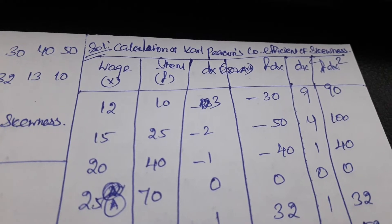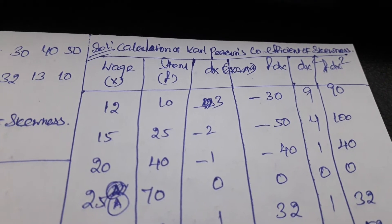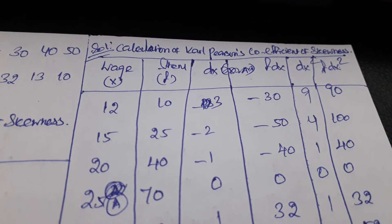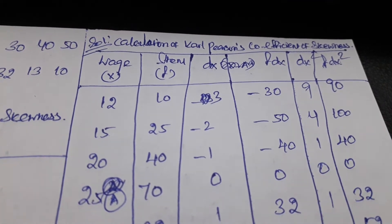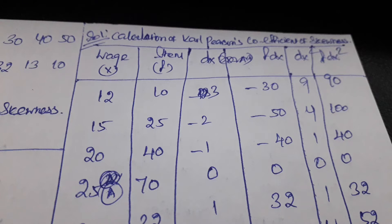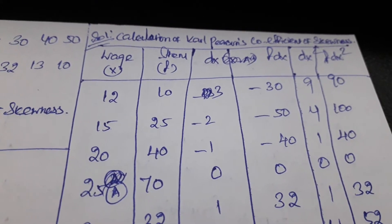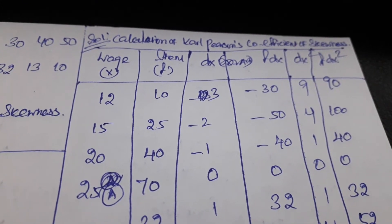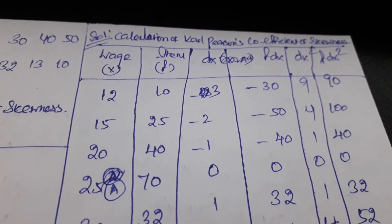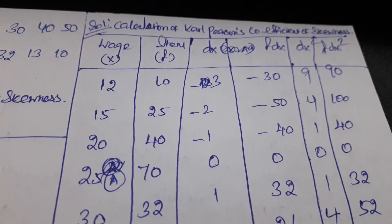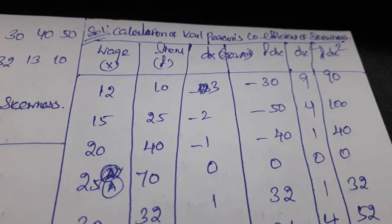Skewness is a measure of the symmetry of your distribution. It depends on mean, median, and mode. The highest point of your distribution is its mode.